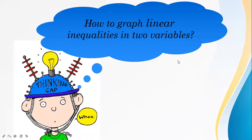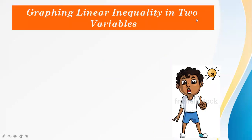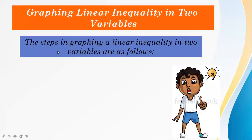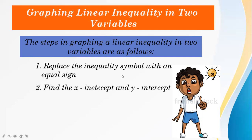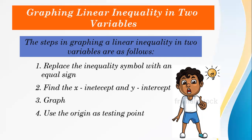Now, how to graph linear inequalities in two variables. The steps in graphing a linear inequality in two variables are: number 1, replace the inequality symbol with an equal sign; number 2, find the x-intercept and y-intercept; number 3, graph; then use the origin as the testing point.